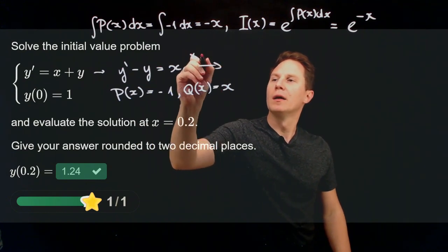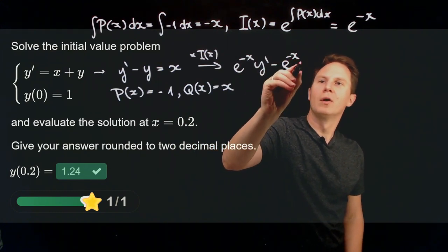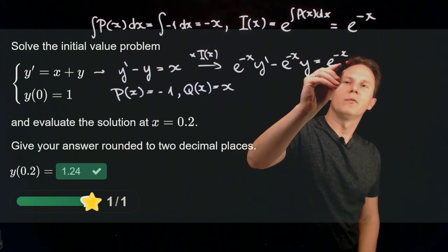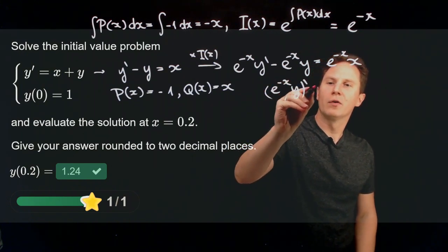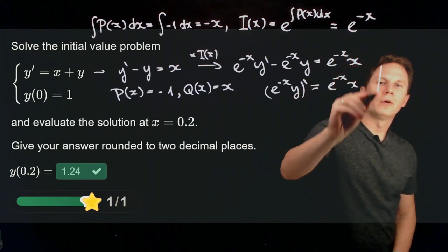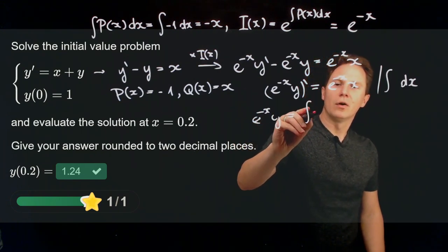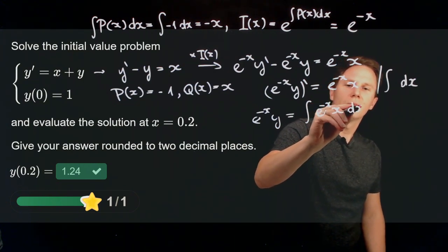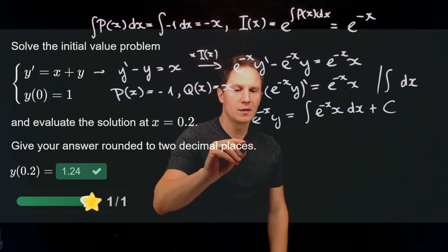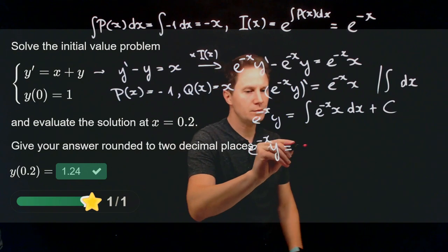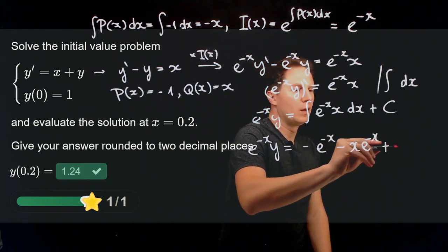Multiplying by the integrating factor e to the negative x gives e to the negative x times y prime minus e to the negative x times y equals e to the negative x times x. The left-hand side is the derivative of e to the negative x times y. Integrating both sides with respect to x, we get e to the negative x times y equals the integral of x times e to the negative x dx plus the constant c. Using integration by parts, this evaluates to negative e to the negative x minus x times e to the negative x plus c.